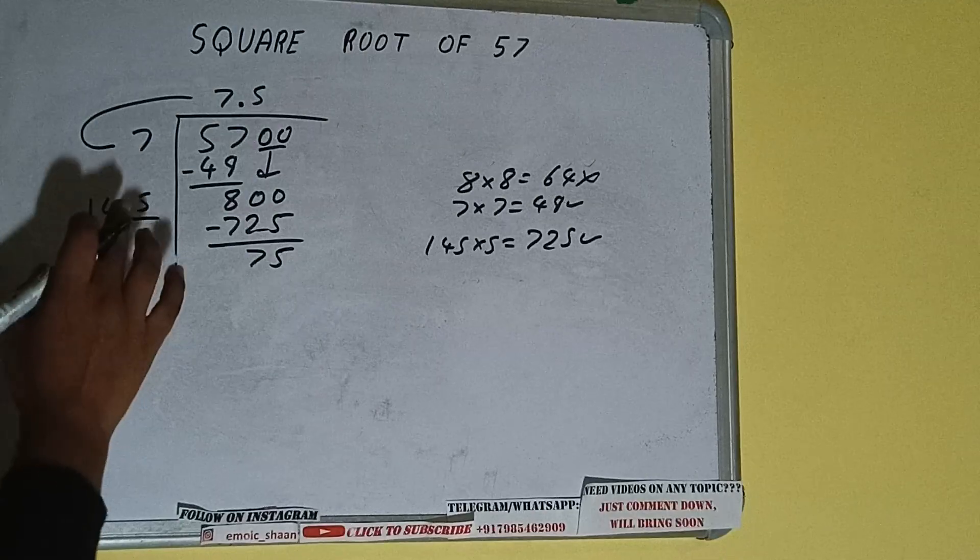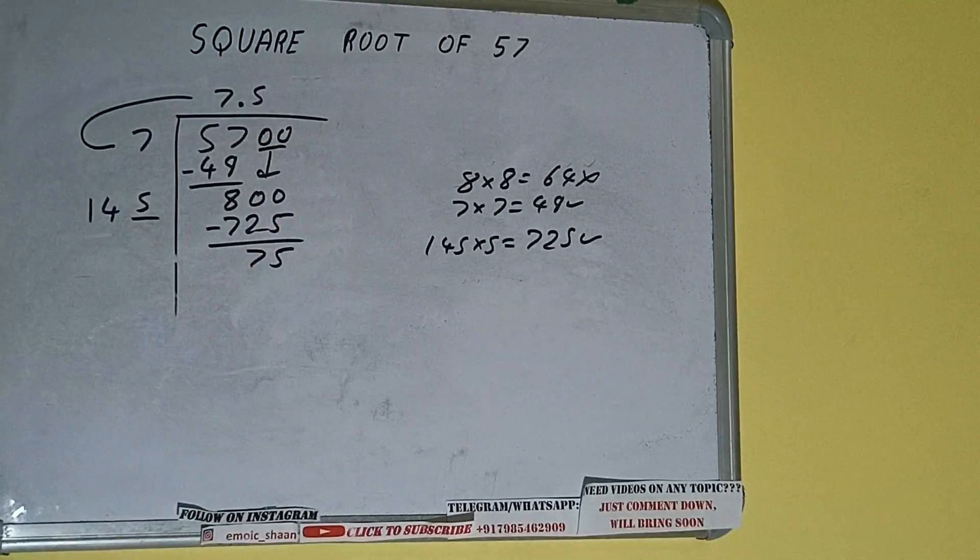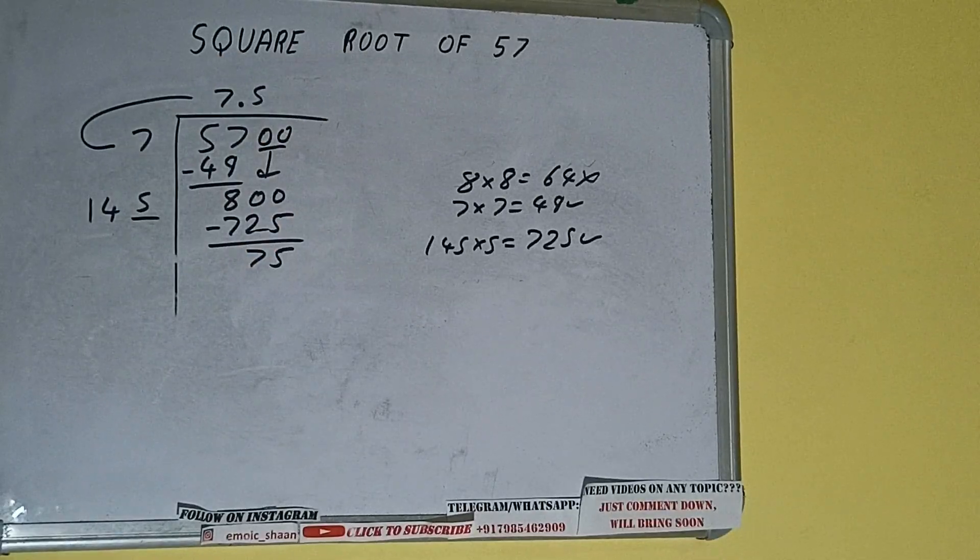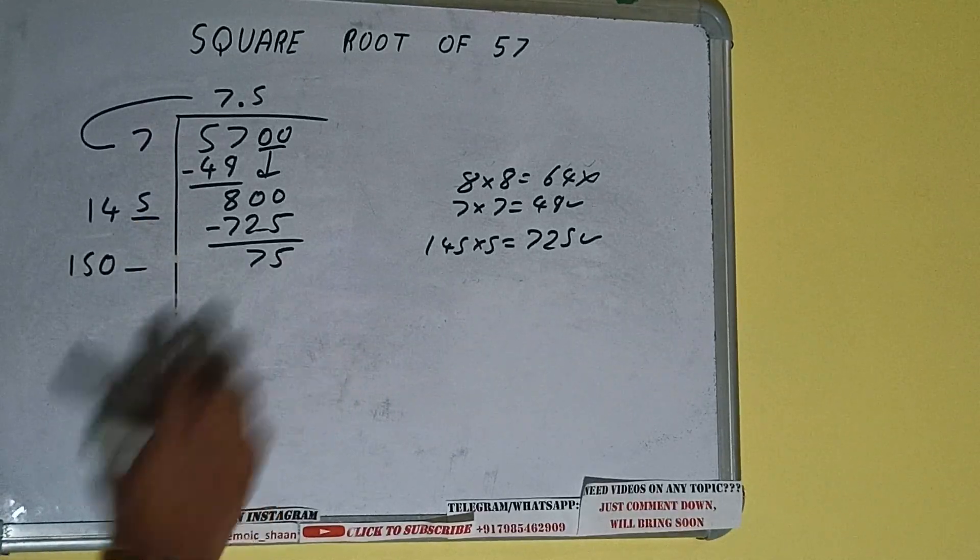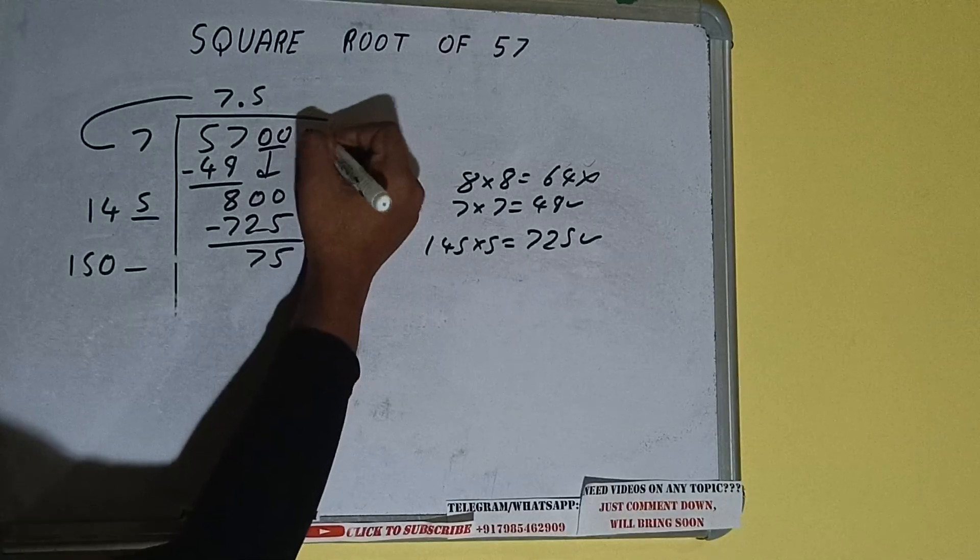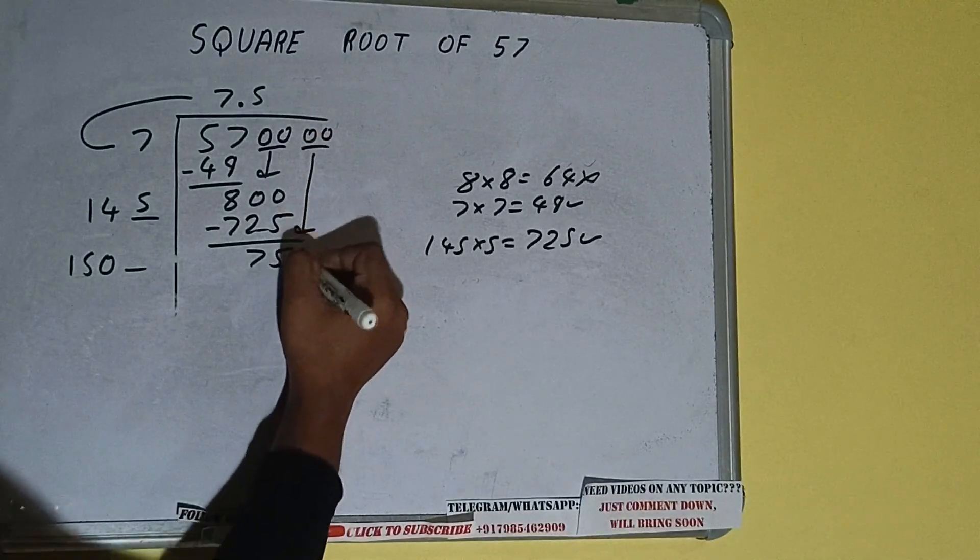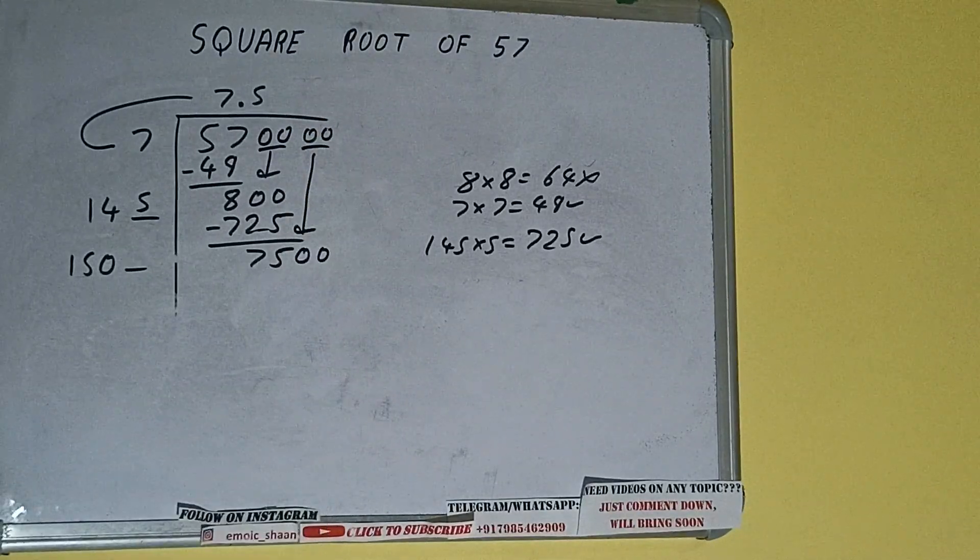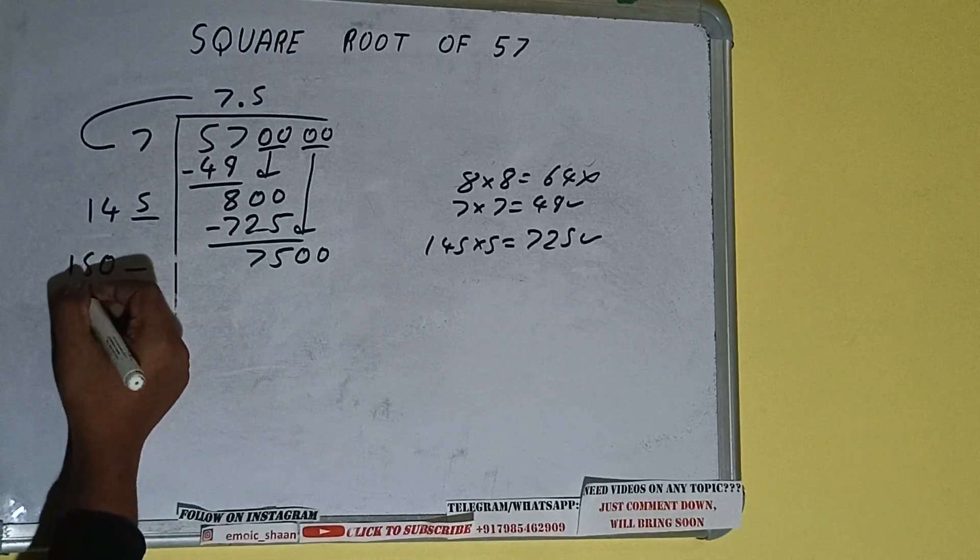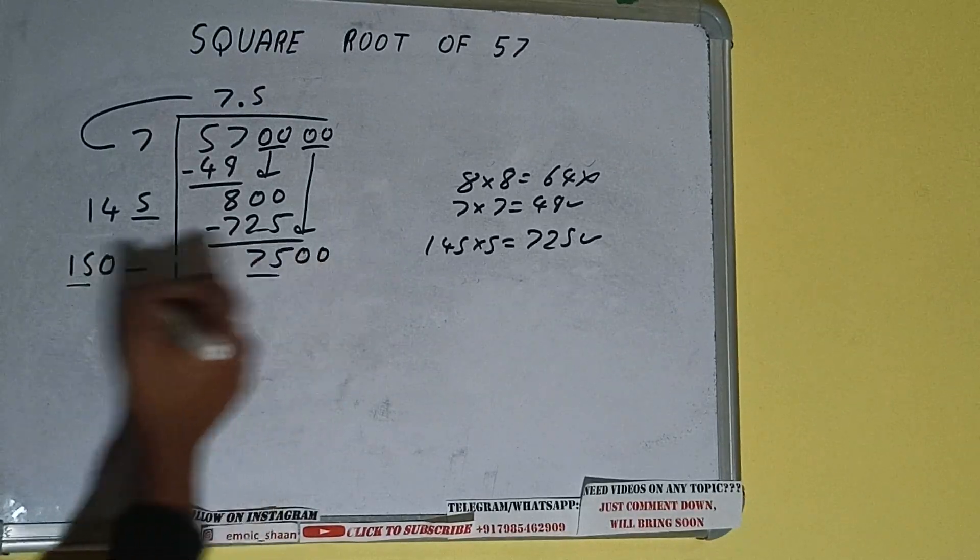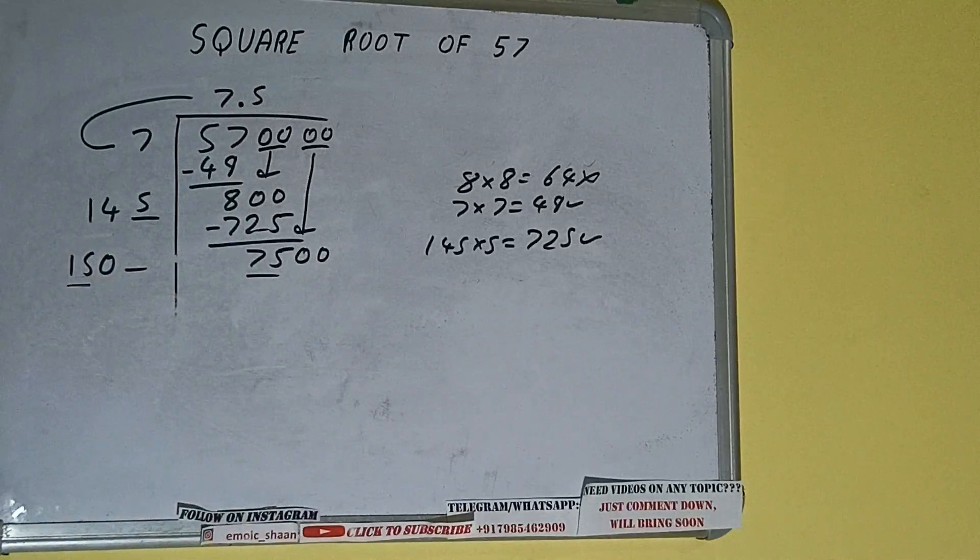Now 145 into 5 we did, so add both. 145 plus 5 will be 150 and 1 digit extra. This number we need to make it big, so bring the next pair of zeros down, two zeros down, and number will become as 7500. Now compare this 15 with this 75.